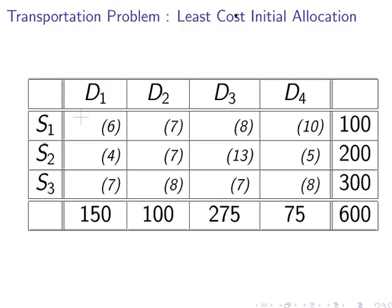So in this first instance, the cell with the lowest transportation cost here is this one here, 4. Now, S2 can supply 200, but D1 will only accept 150. So that is what we are going to do, we are going to give it 150 there from S2 to D1.